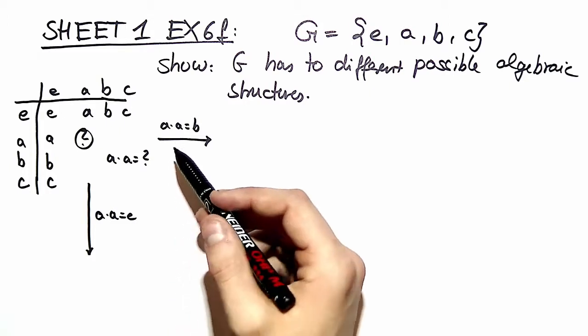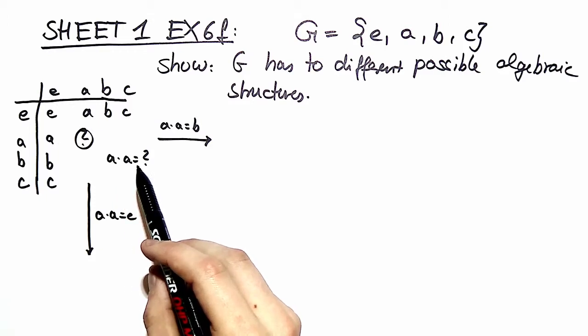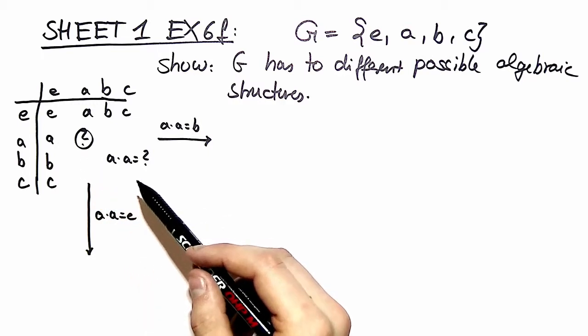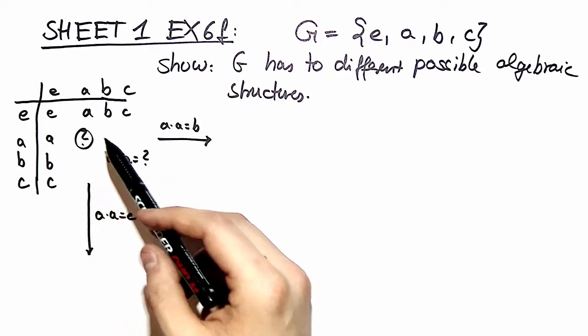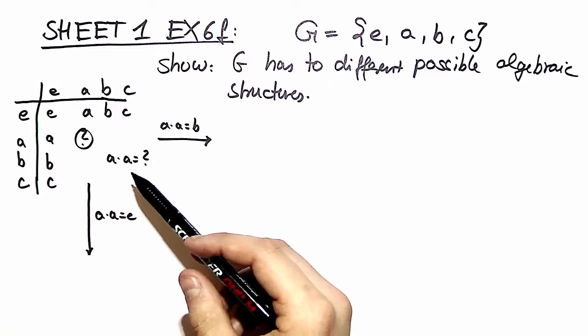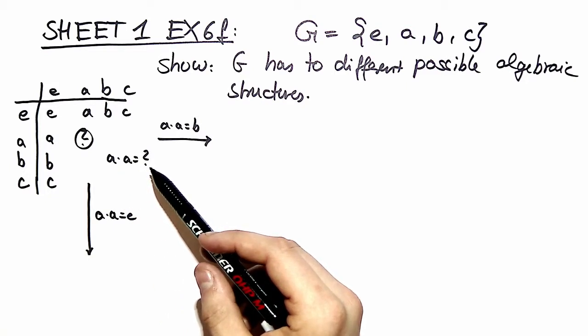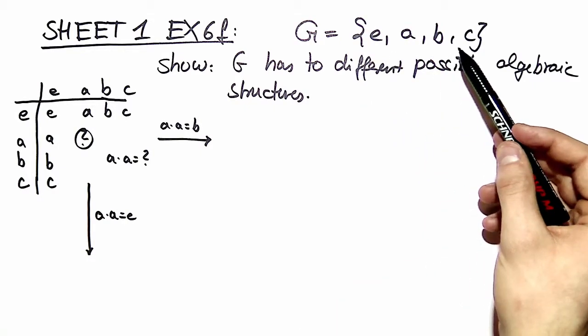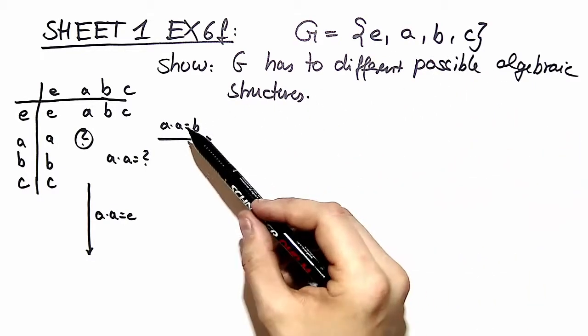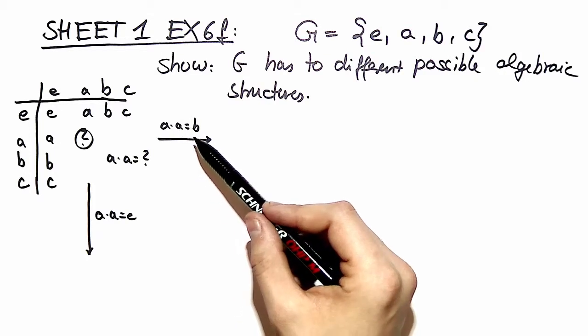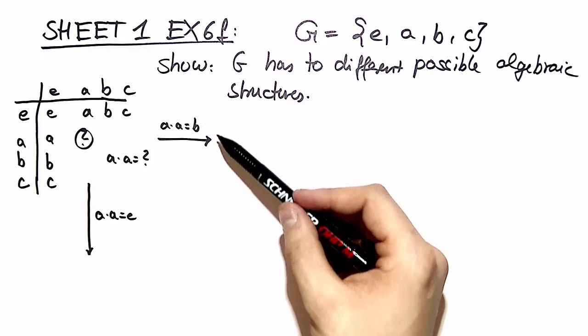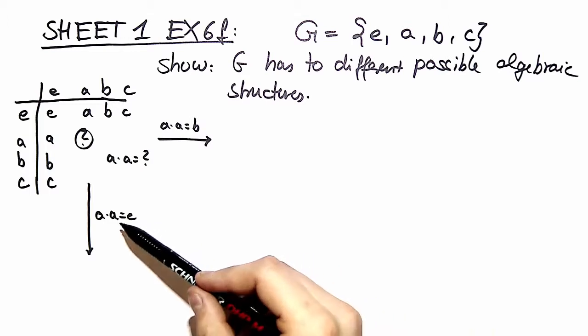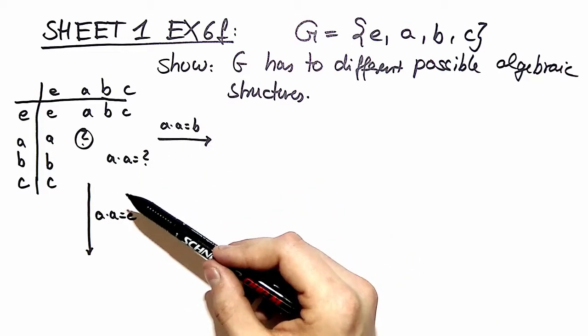Okay let's check the other two. What happens if we put a times a equal to a? Well that would imply a being the identity element and we already got that covered for e. What happens if we take a times a equal to c? If a times a equal to c then it wouldn't be any different to a times a equal to b because we could simply relabel b and c and we would recover that multiplication table. So in fact we've got only two different choices for a times a.